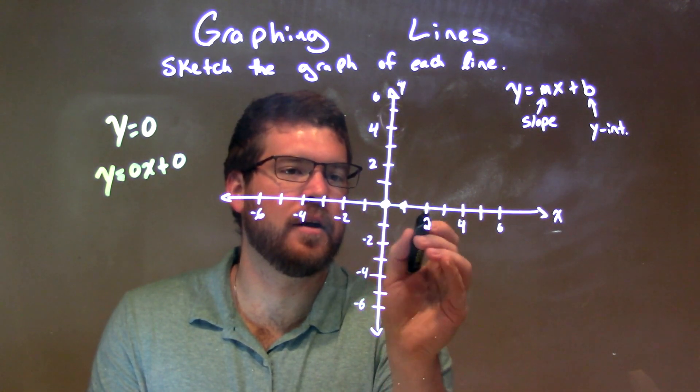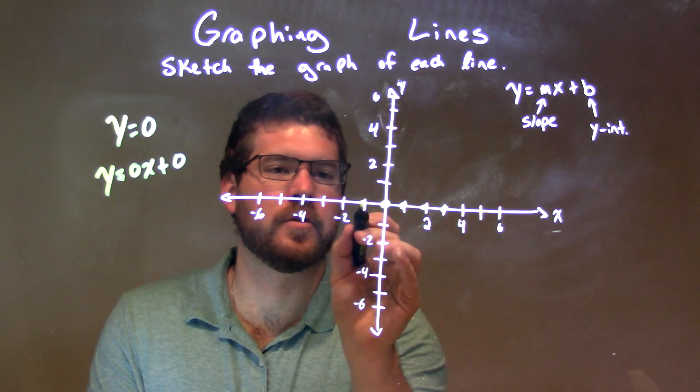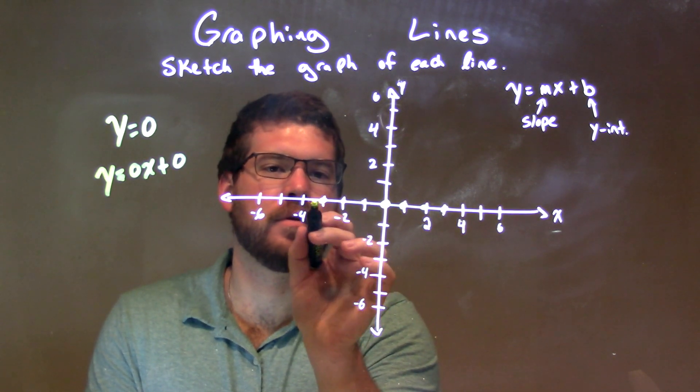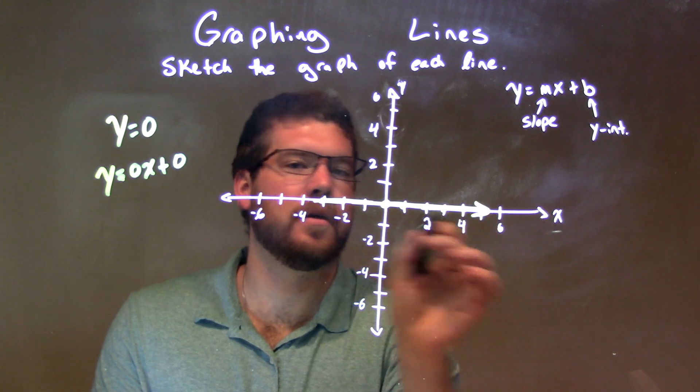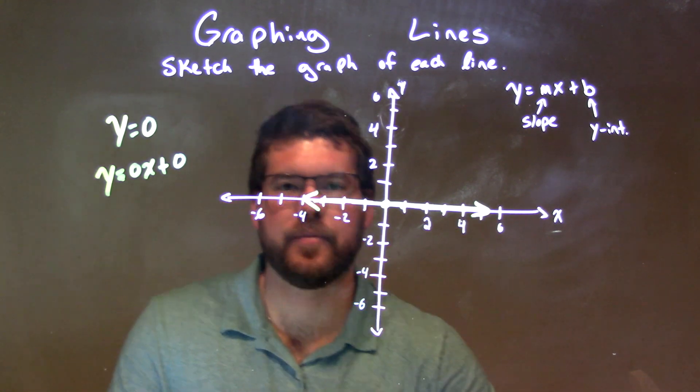So this is just a horizontal line on our origin. There is our graph, right there.